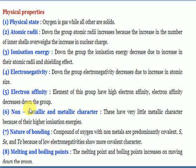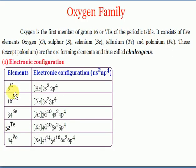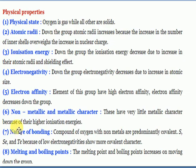Non-metallic character decreases down the group. Oxygen and sulfur are non-metals; selenium and tellurium are metalloids; polonium has metallic nature. Because of the high tendency of gaining electrons, oxygen and sulfur act as non-metals. Metallic character increases down the group.